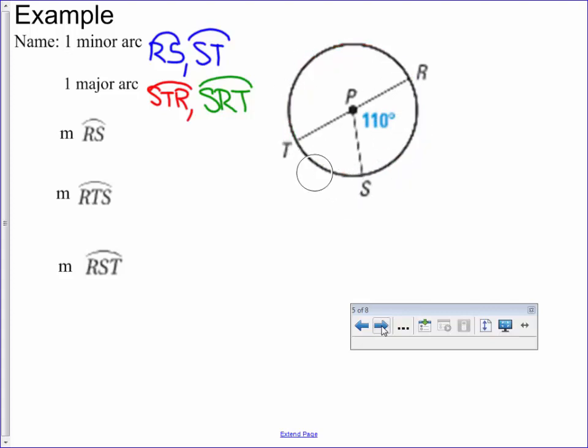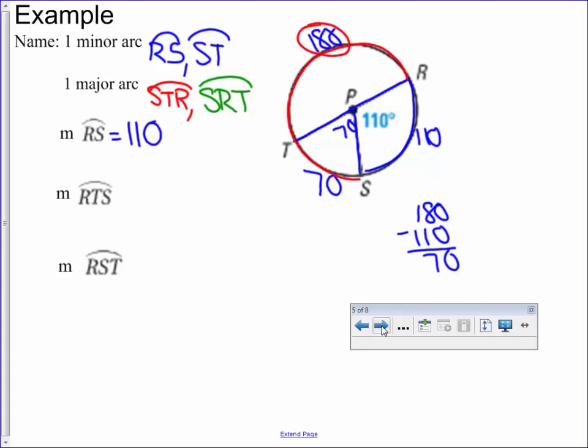Let's look at the measures. So far we've got 110. I can put 110 out here, so that arc is 110. We have the diameter, which is a straight line. So I can do 180 minus 110 to get 70, which makes that arc 70. The diameter cuts the circle in half, so RT is a semicircle at 180. The measure of RS is 110. For RTS, go around from R to T to S - that's 180 and 70, so 250. For RST, we have 110 and 70, which is the semicircle, so 180 degrees.